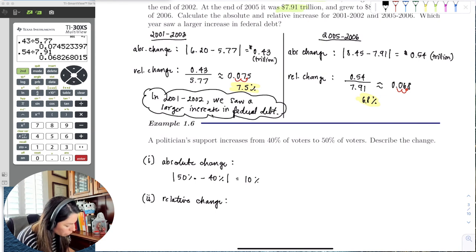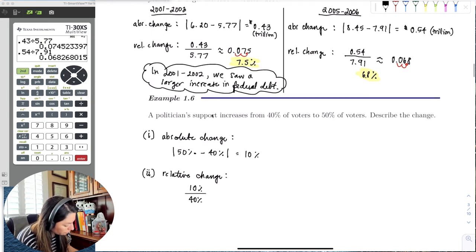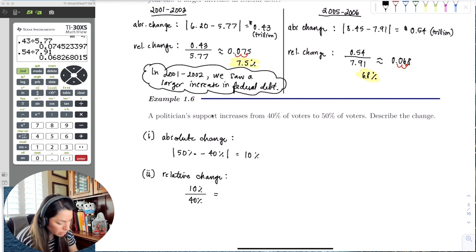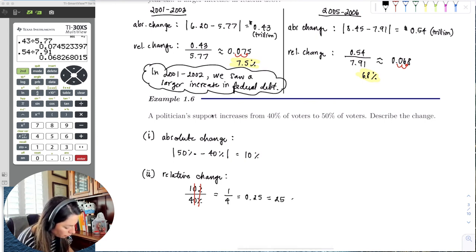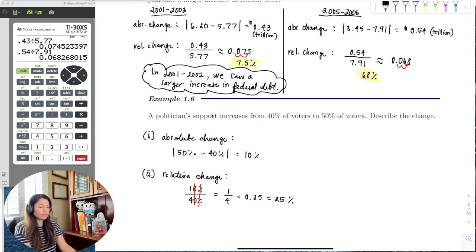So the relative change is the absolute change, 10%, divided by the initial amount of voters, which is 40%. So if I go ahead and reduce this a little bit, I notice percent symbols can reduce out, zeros reduce out, and I'm left with one-fourth. Well, one-fourth is a quarter, right? So that's 0.25, and then that's equivalent to 25%. So we do know that there was in actuality a 25% increase in voters overall,